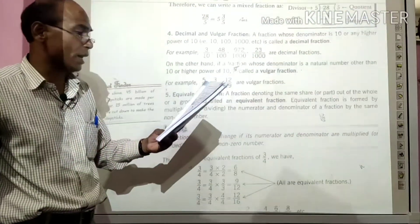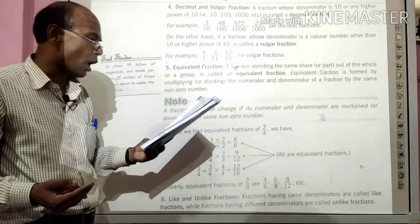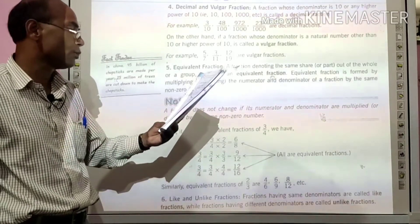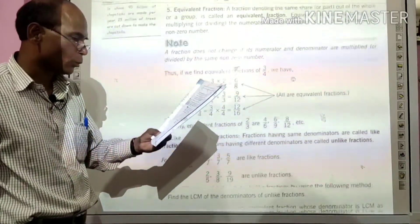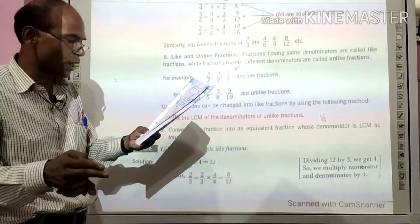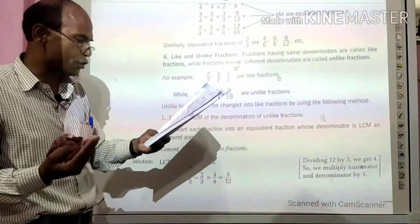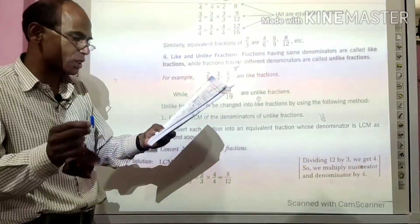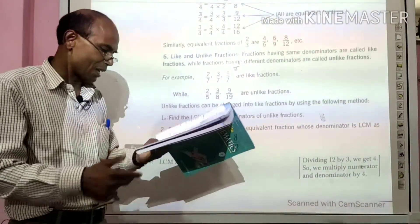Next आता है equivalent fraction. A fraction denoting the same share out of the whole or a group is called an equivalent fraction. Like and unlike fraction — वह भिन्न जिसका denominator समान होता है उसको हम like fraction कहते हैं, और जिस भिन्न का denominator अलग-अलग होता है उसे हम unlike fraction कहते हैं.